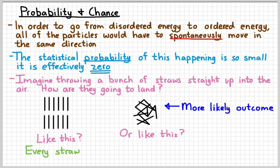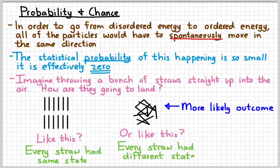The reason that that's the more likely outcome, in the picture on the left, every straw has the same state, pointing up and down. Whereas in the picture on the right, every straw has a different state. The probability of a bunch of things all ending up exactly alike is very, very small. So if you took a dozen straws and you tossed them up in the air and let them fall, you could probably live a thousand years and never have them land just like that. Statistically, the odds of that happening are zero.